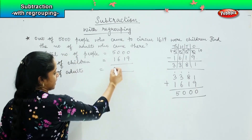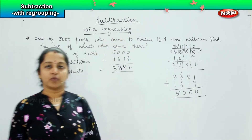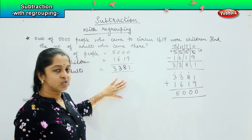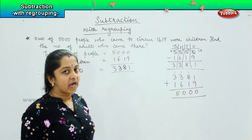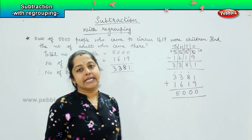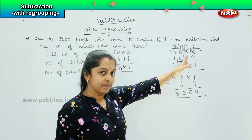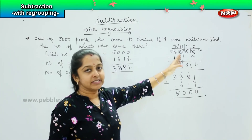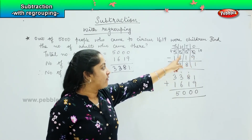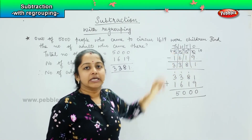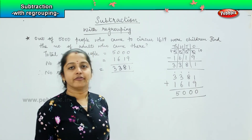So, 3381 people were adults in this group at the circus. What did we do, children? First, we placed them in their correct place value. After that, we borrowed from the next place value — for example, in the ones place, if the number is short, I borrowed from the tens, then from the hundreds, and then from the thousands. The number borrowed must be subtracted from the respective column. This is called solving sums with the regrouping method.